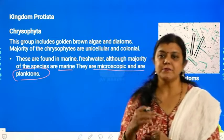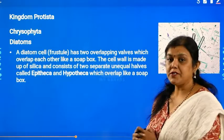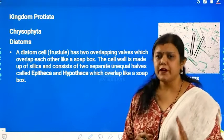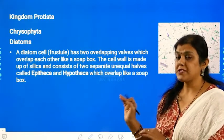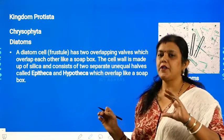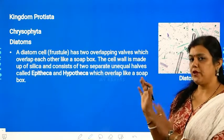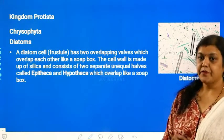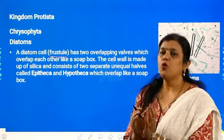They are microscopic and are planktons. Planktons are those tiny floating organisms which are present on the water surfaces and serve as food for bigger organisms. These are brown algae that are unicellular, stay in a colony, and are basically marine. Now about chrysophyta — diatoms specifically have two overlapping valves.